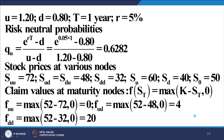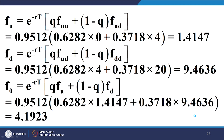We now work out the risk-neutral probabilities. The upswing probability QU equals (e^(RT) − D) / (U − D). Substituting the respective values, QU equals 0.6282, and correspondingly QD equals 0.3718. So the probability of an upswing is 0.6282 and the probability of a downswing is 0.3718.